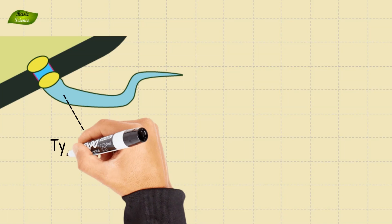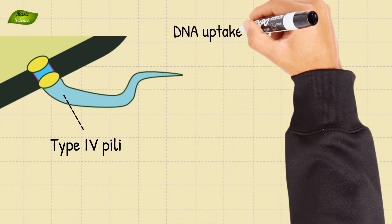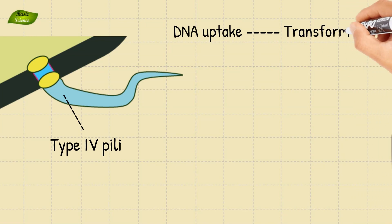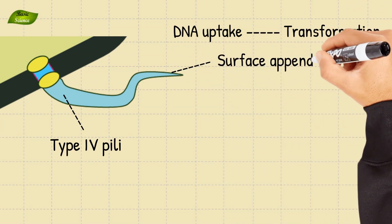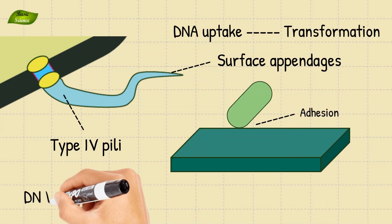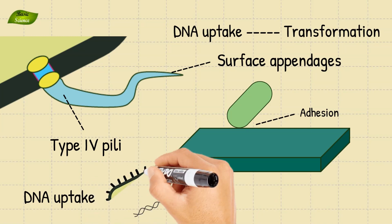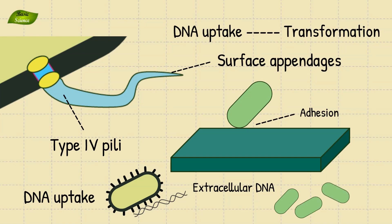Type 4 pili plays a crucial role in the process of DNA uptake during natural bacterial transformation. Normally, these type 4 pili serve as surface appendages that mediate adhesion to abiotic and biotic surfaces. In the context of DNA uptake, these pili facilitate the binding of extracellular DNA fragments to the bacterial cells.